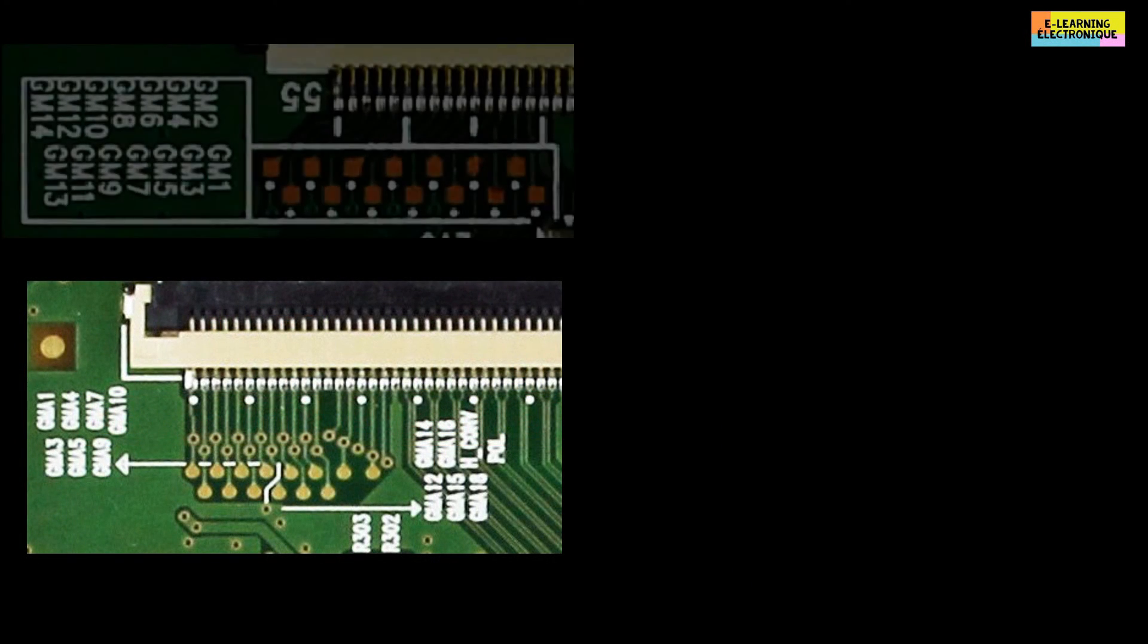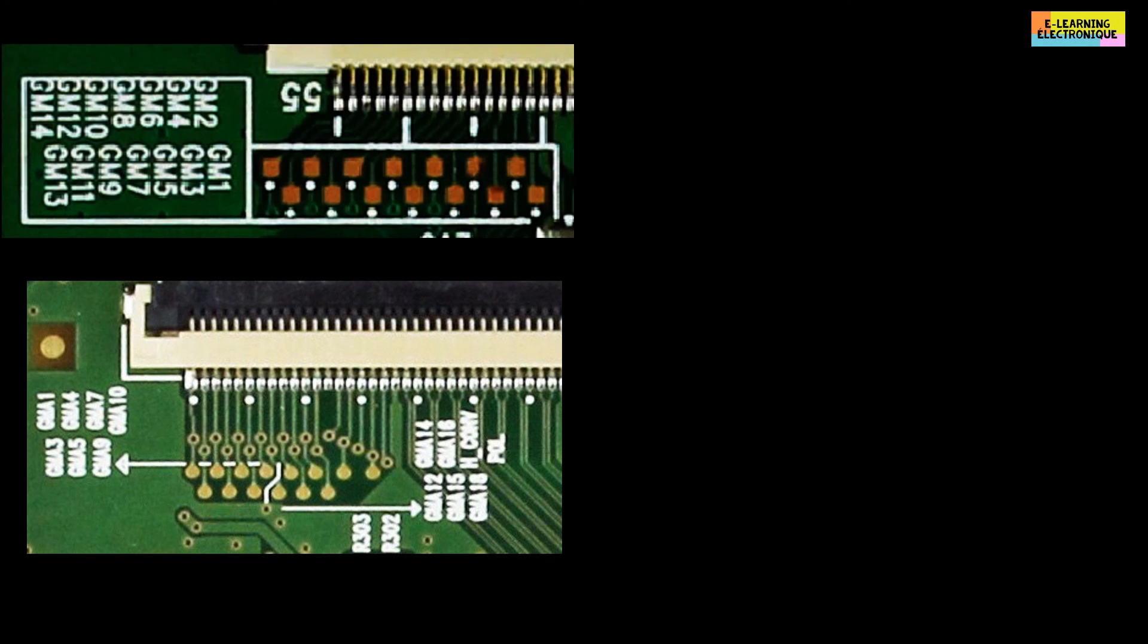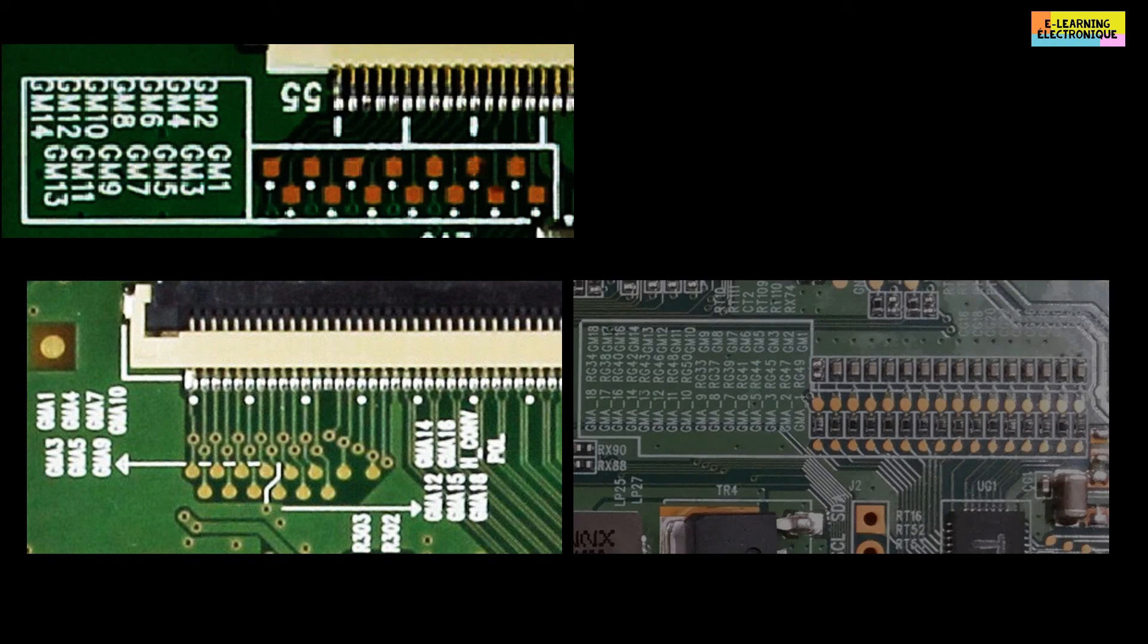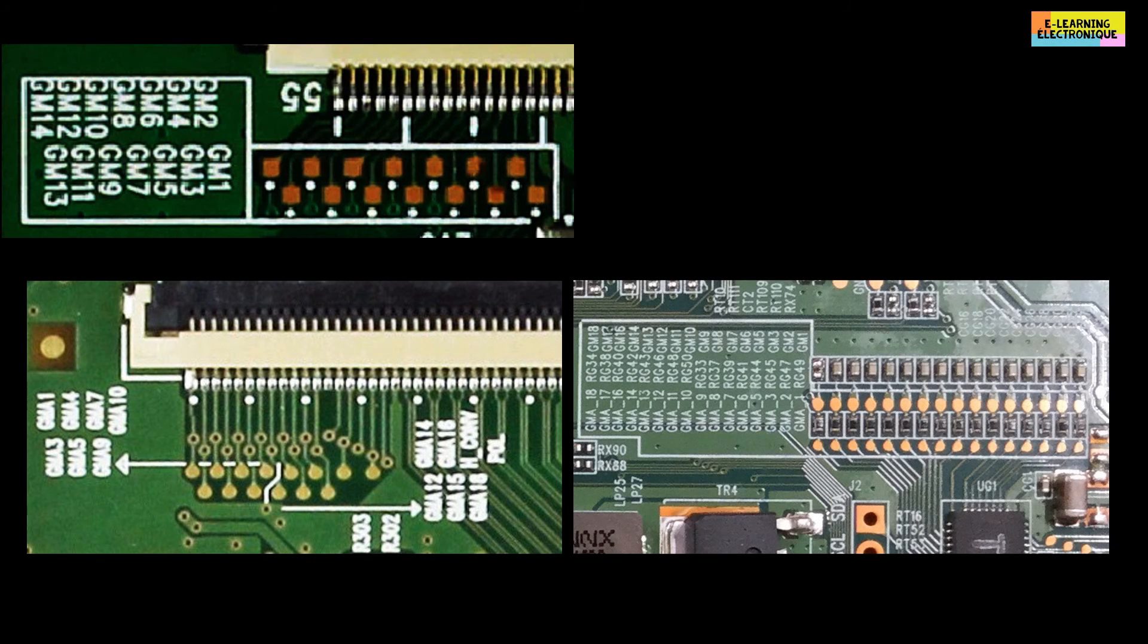The gamma test points are not always clearly written on the T-con board as in the previous example. There are other inscriptions which are generally an abbreviation of the word gamma. We can find for example as inscription GMA, GM, VGM. V is for voltage and GM is the contraction of the word gamma.